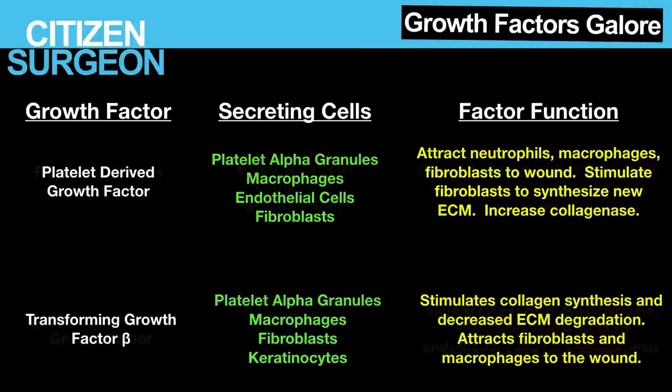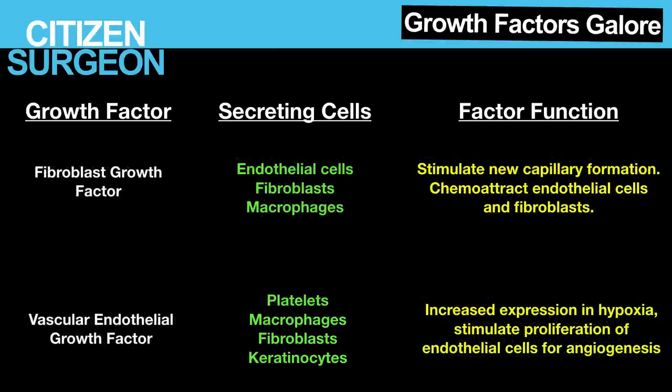Two more growth factors. Fibroblast growth factor, or FGF, is secreted by endothelial cells, fibroblasts, and macrophages. It stimulates endothelial cells to divide and form new capillaries — wounds need blood to heal, and this is also why wounds are a little red or pink. Vascular endothelial growth factor, or VEGF, is secreted by platelets, macrophages, fibroblasts, and keratinocytes. VEGF expression is increased in hypoxia and stimulates proliferation of endothelial cells for angiogenesis. Both FGF and VEGF are involved in increasing the blood supply to get the wound healed.